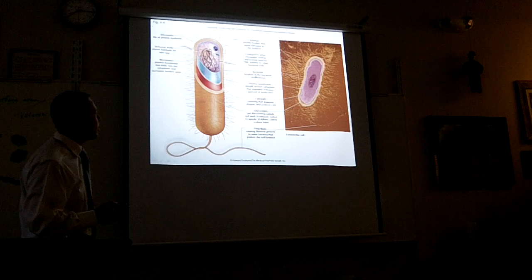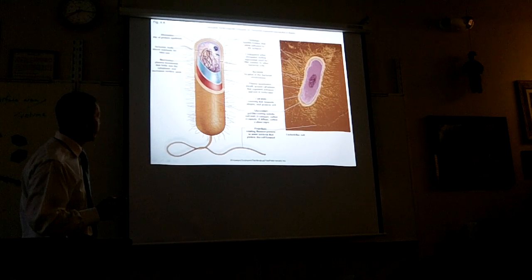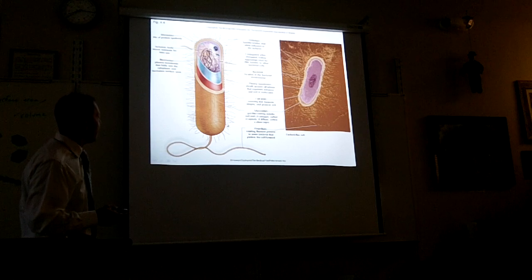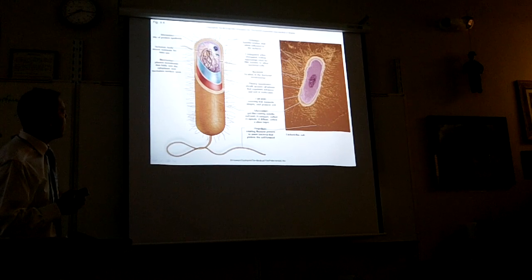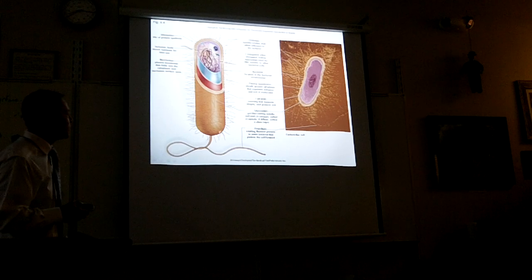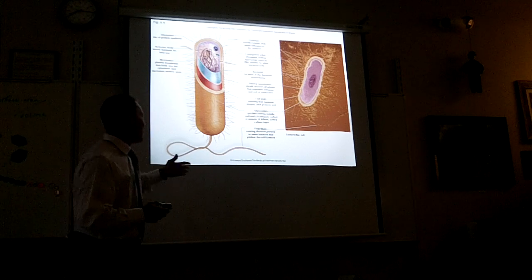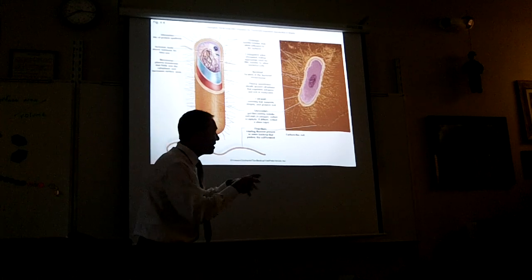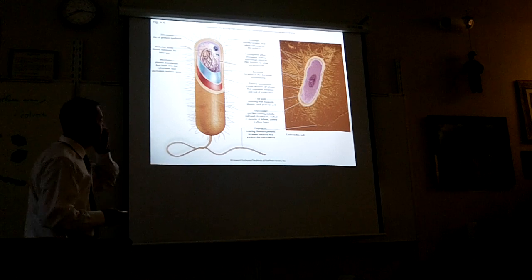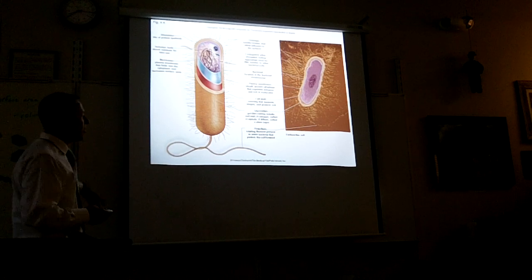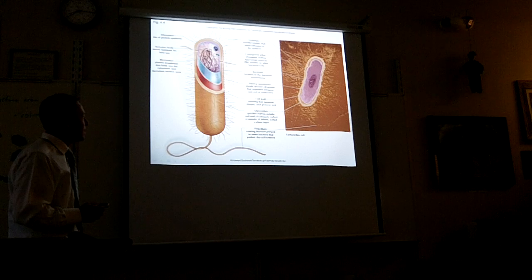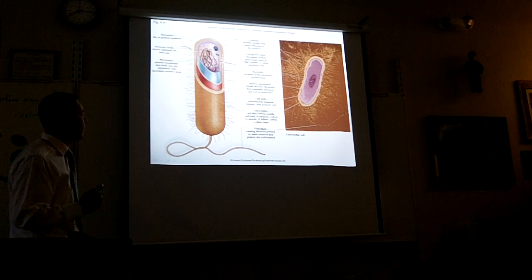You have DNA floating around in the middle — we call that the nucleoid. On the very outside, you have all these hairs called fimbriae. They help this cell stick to things. Bacteria can stick to things pretty easily, and those little hairs help them. They're stuck to the wall, stuck to your skin, on the floor and sides of your sink — they're all over the place.